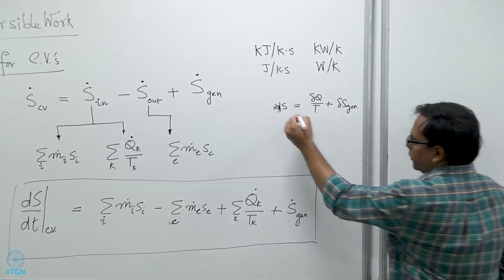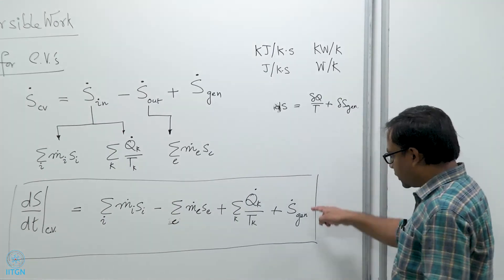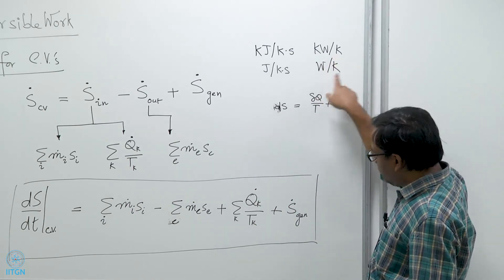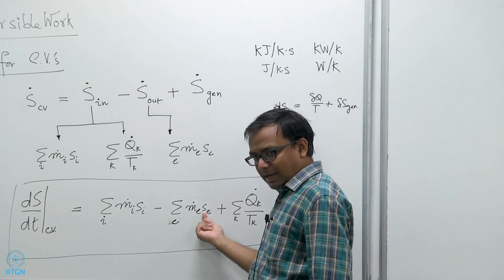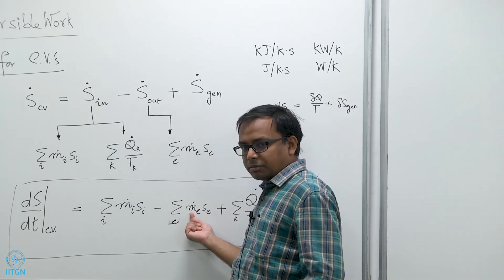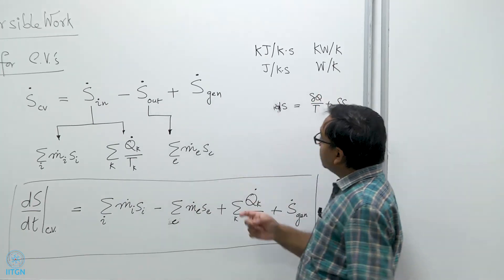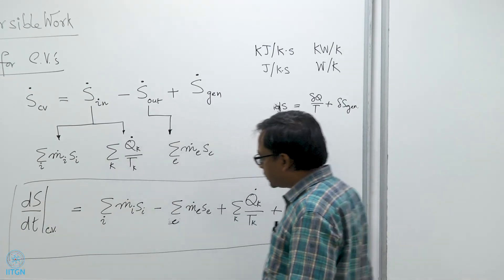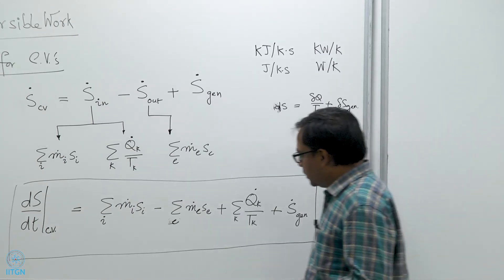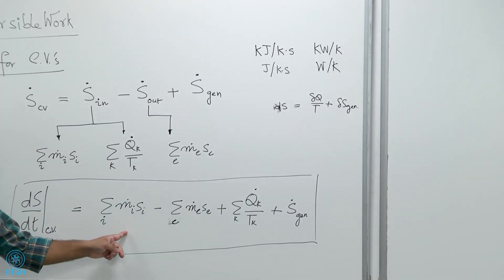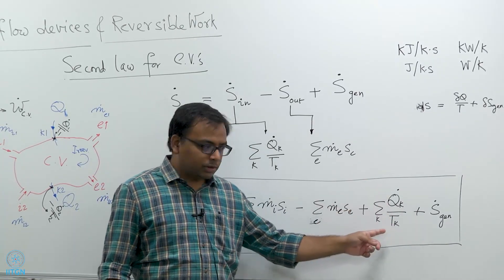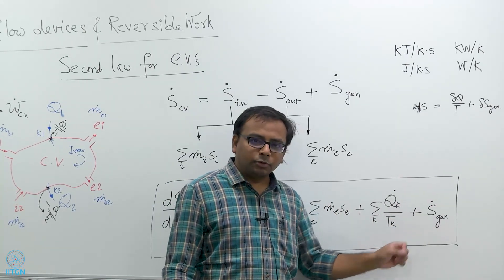This is the second law expressed for a control volume. It basically tells you the entropy of a control volume can increase because of net mass exchange with the surroundings, it can also change if there is heat exchange with the surroundings, and it can also increase if there is entropy generation within the system boundary. You have to account for every possible scenario that can contribute to a change in entropy of a control volume. You have to be careful about what T-k is, and also note that s-i and s-e are state properties.